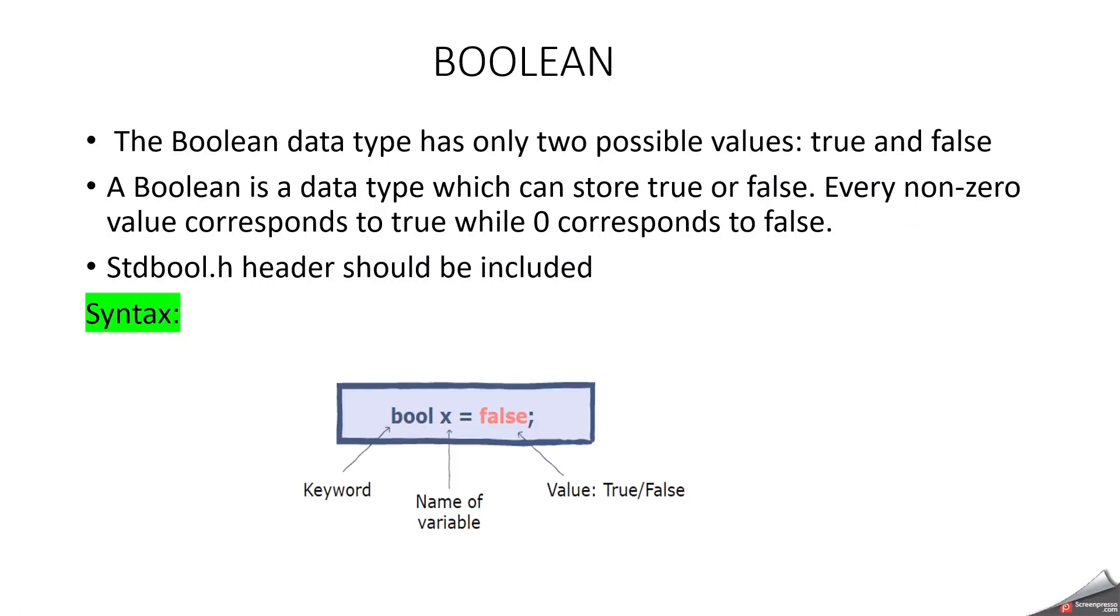Boolean. Boolean is a data type that has only two possible values. One is 0 or 1 meaning true and false. Basically boolean will be used in the logic wise or if you want to use the flag in those areas we can use the boolean. Boolean is a data type which can store true or false. Every non-zero value corresponds to true while 0 corresponds to false. So it only deals with 0 and 1. Syntax: bool is a keyword to represent the boolean data type and x is the name of the variable here and initially declared with false. Very important thing is if you want to use boolean then you have to use the header inclusion called stdbool.h. This should be included otherwise your IDE or compiler will throw an error.